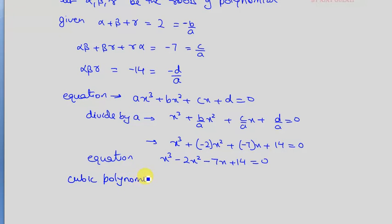The cubic polynomial is x³ - 2x² - 7x + 14.